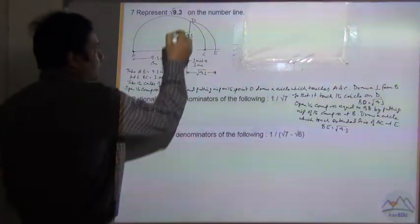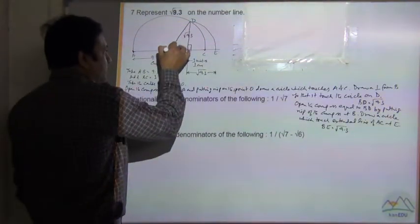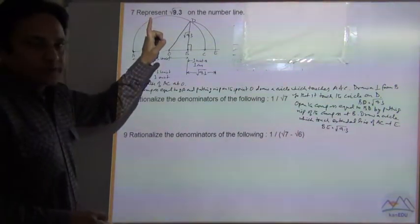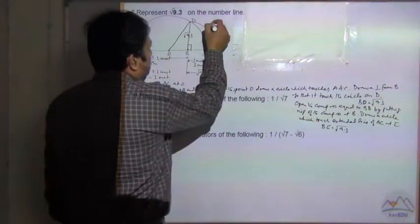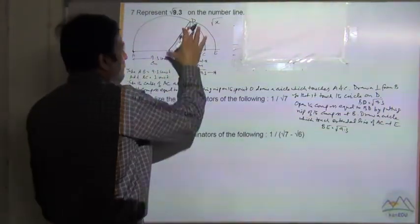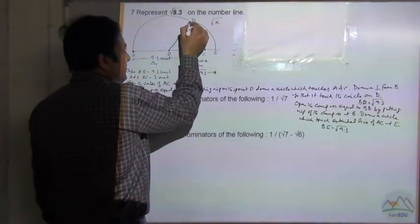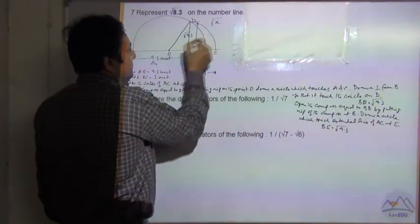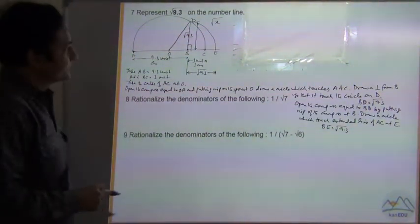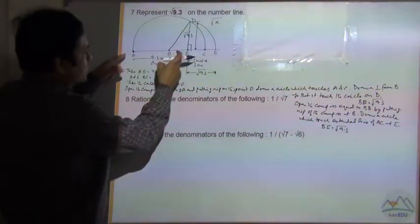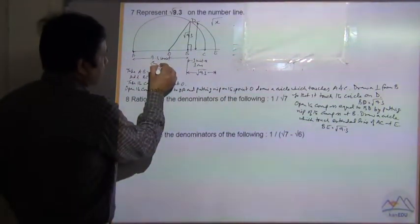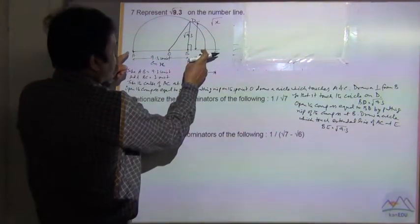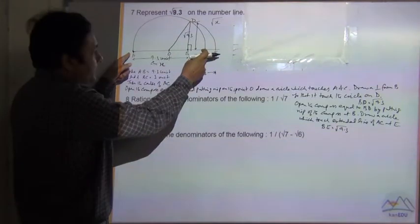Now let us prove why this works. Let us join OD. Say BD is some value y, and we need to find that this distance BD is equal to root x, where x is the length AB. So we need to prove y is equal to under root x.